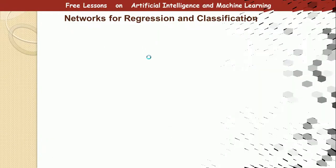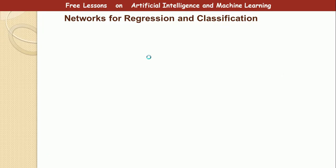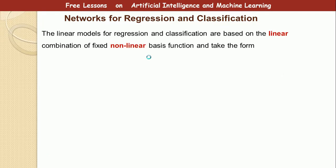Alright, so let's now look at neurons for regression and classification. Remember that in case of regression and classification, we have a training dataset. We are trying to understand this training dataset, so that when we receive a new input, we will be able to classify correctly.